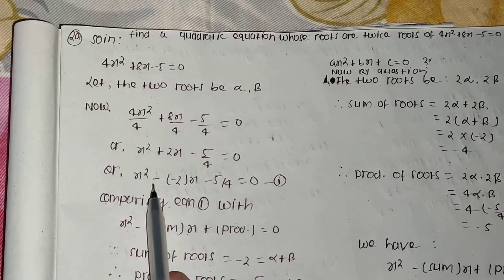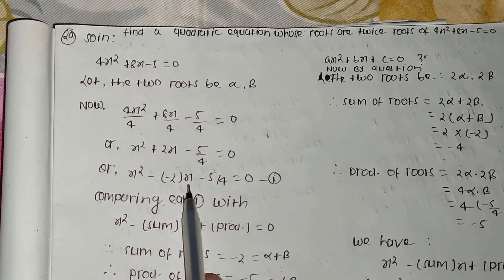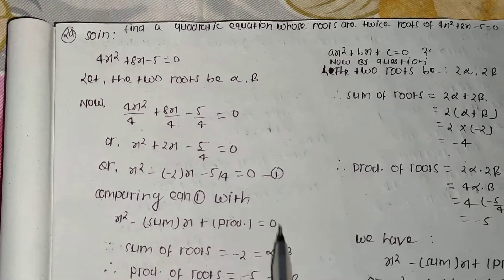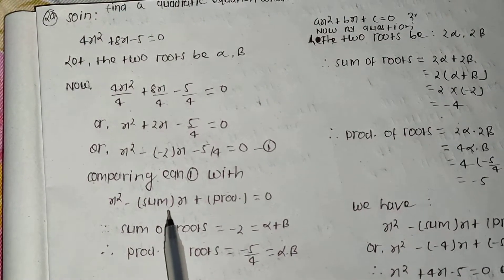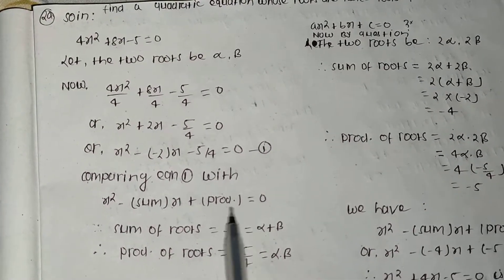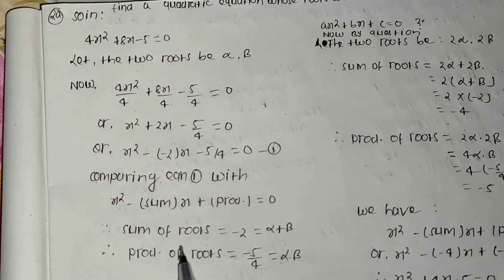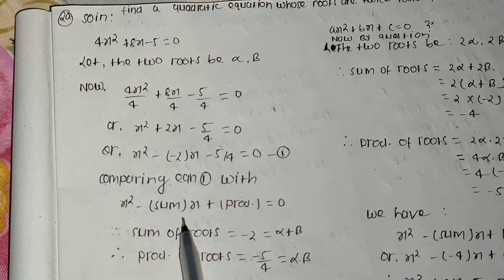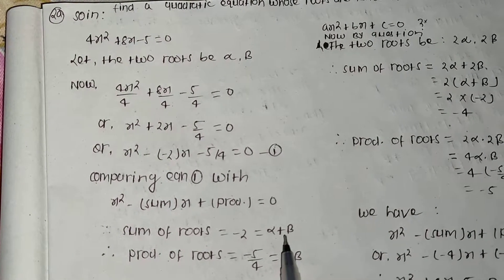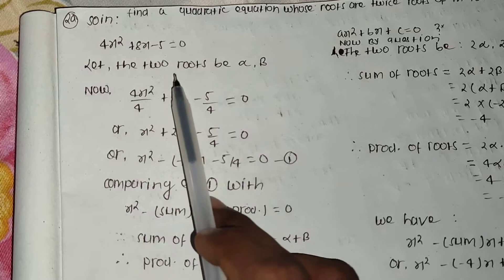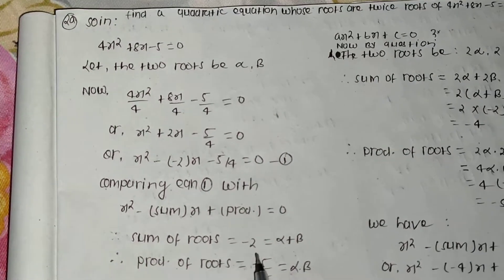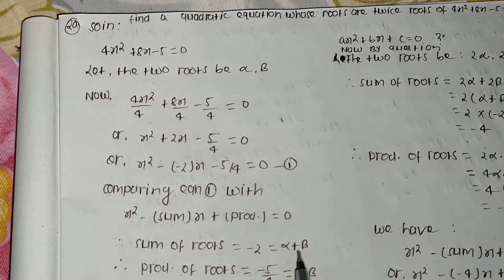So we get x² - (-2)x - 5/4 = 0 as the first equation. Comparing with x² - (sum)x + (product) = 0, the sum of the roots equals -2, which means alpha + beta = -2.